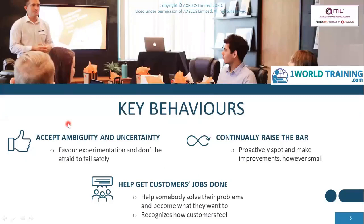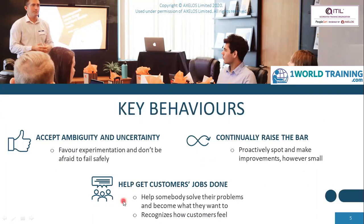What do these behaviors mean? Accept ambiguity and uncertainty is about favoring experimentation and not being afraid to fail safely. Continually raising the bar is about proactively spotting and making improvements, however small they are. Helping customers get their job done is about helping somebody solve their problems and become what they want to become, and also recognizes how customers feel.